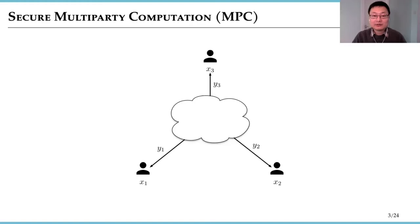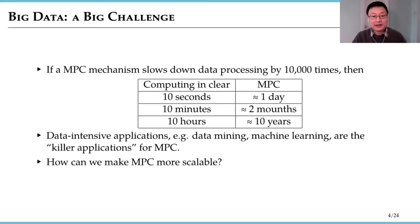One of the biggest challenges is big data. Because of its cryptographic nature, MPC is much slower than computation with plain text data. If you only have a small amount of data, then it's not a big problem. But if you have a large amount of data, then you are in trouble. That means, unless we can make MPC much more scalable, there is no way we can use MPC in the killer applications, such as data mining and machine learning.